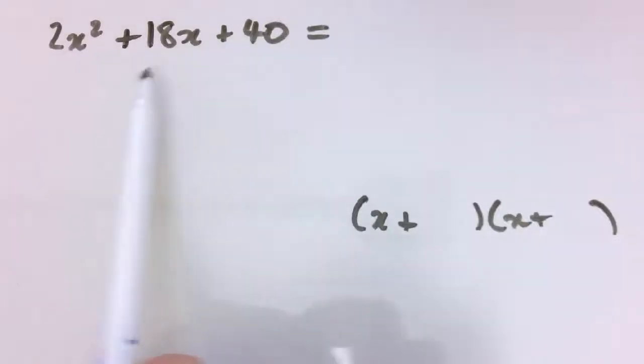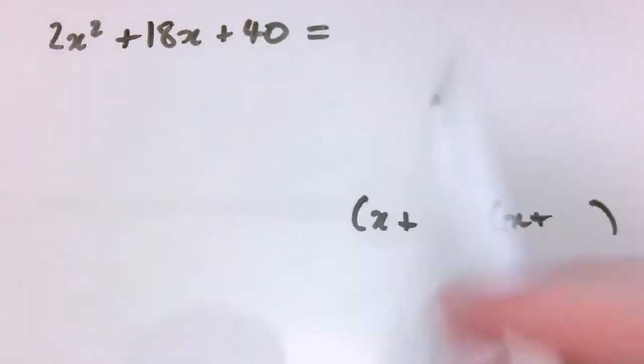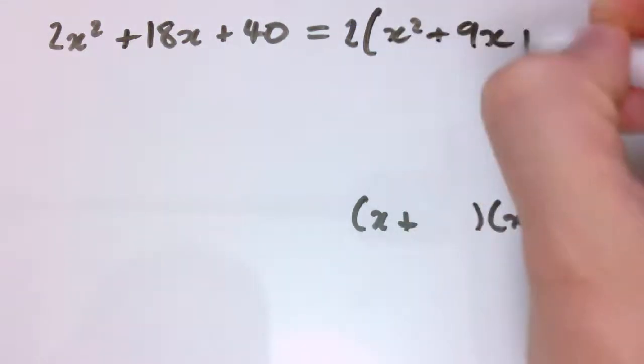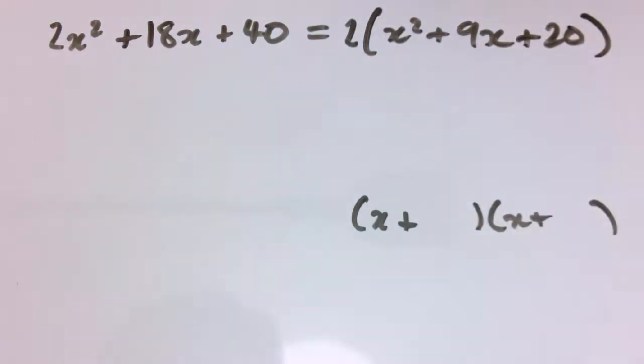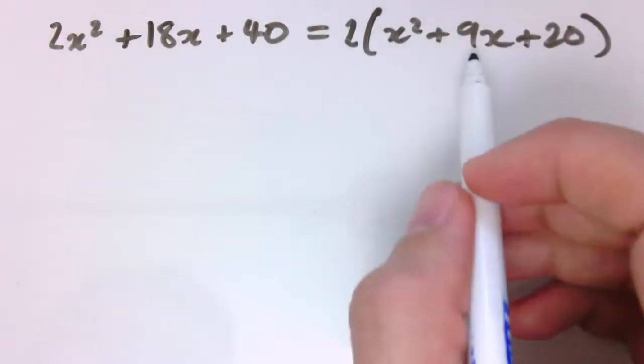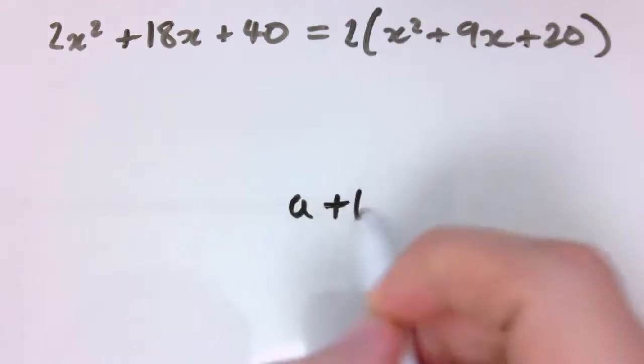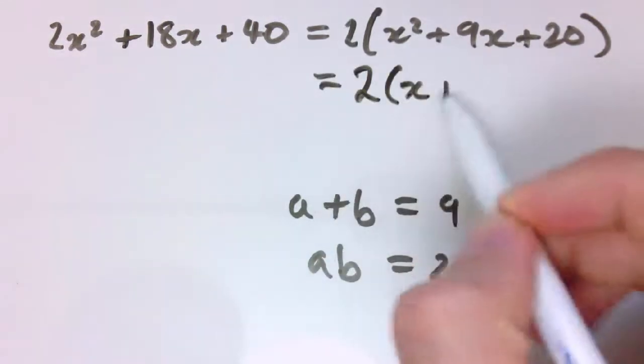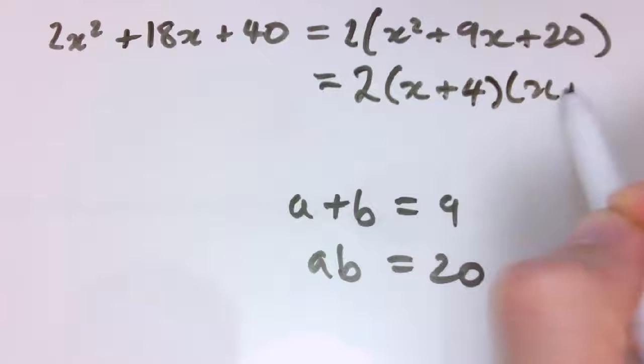So here I can see there's 2 in every single term, so this is the same as 2 times x squared plus 9x plus 20. And now this thing in here, x squared plus 9x plus 20, is the sort of thing we can now factorize with our new method. So I want two numbers that add together to give 9 and multiply together to give 20, and you can see that the numbers that work are 4 and 5. So this is 2 times x plus 4 times x plus 5.